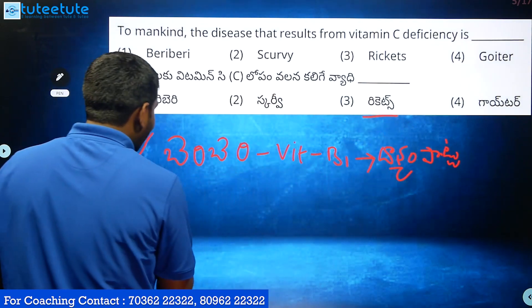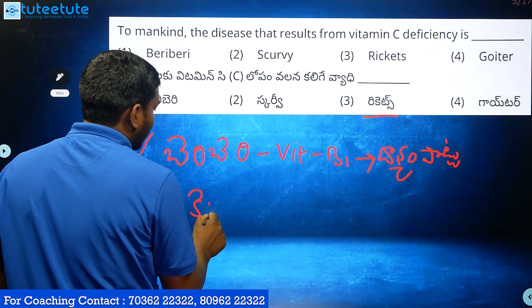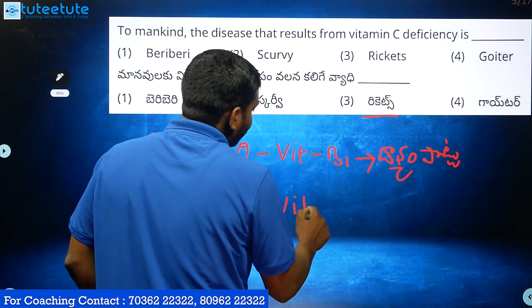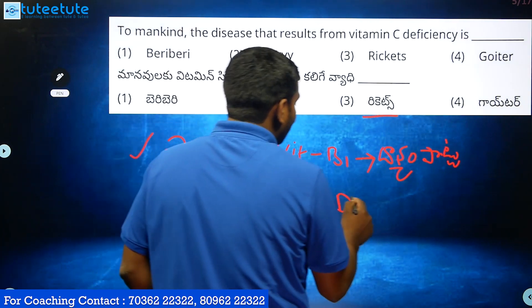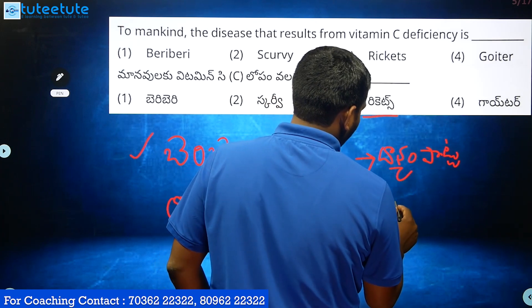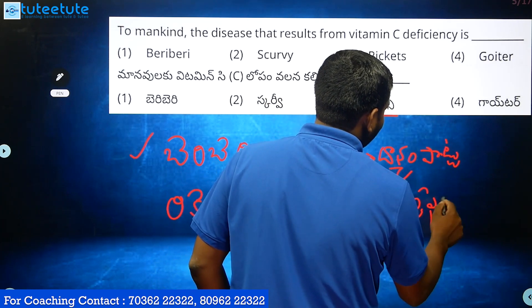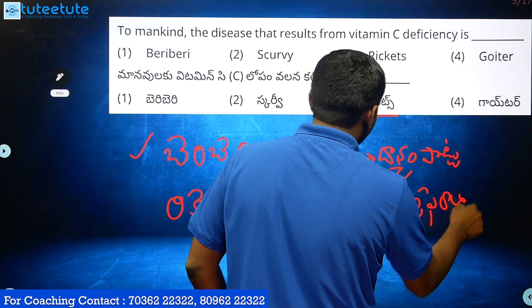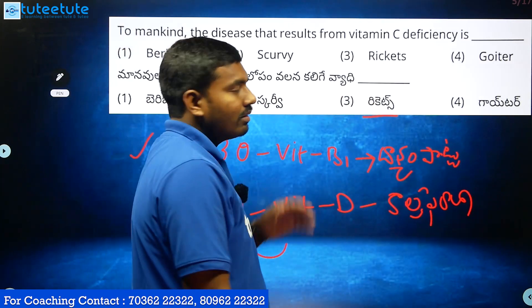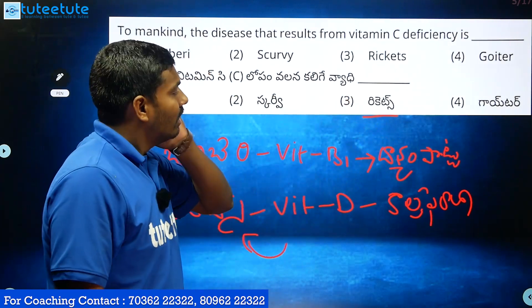Rickets is caused by Vitamin D deficiency. Vitamin D is called Calciferol. So Rickets is caused by Vitamin D deficiency.